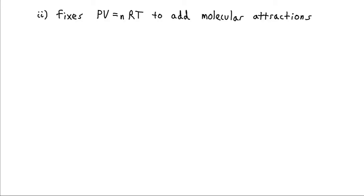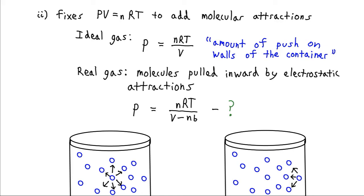The next fix that van der Waals incorporates to the ideal gas equation is he includes the intermolecular attractions. Now our ideal gas equation, if we solve for pressure, that's going to be equal to nRT over V. And remember our definition of pressure, that's the amount of push on the walls of the container per unit area by the gas inside of the container.